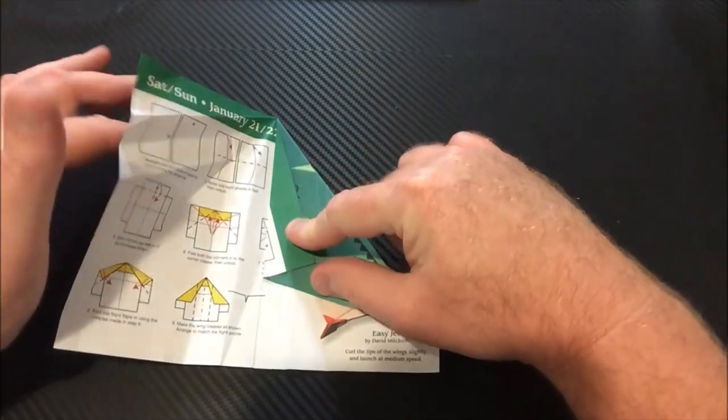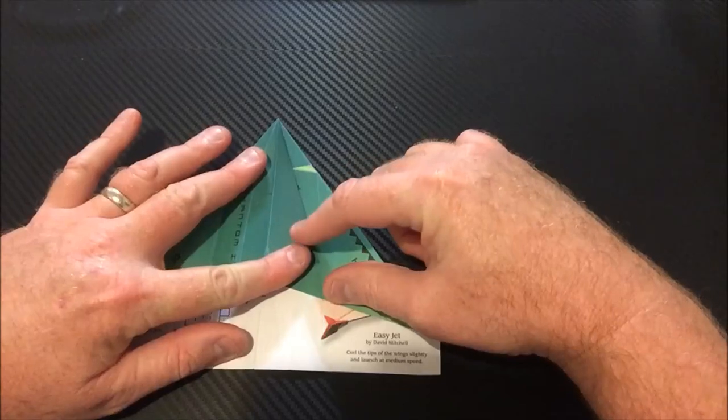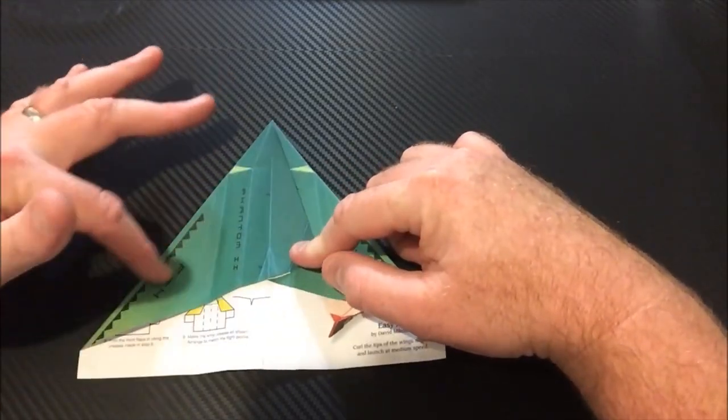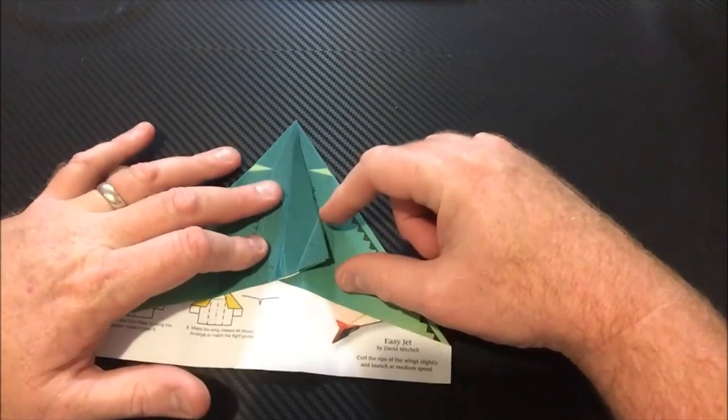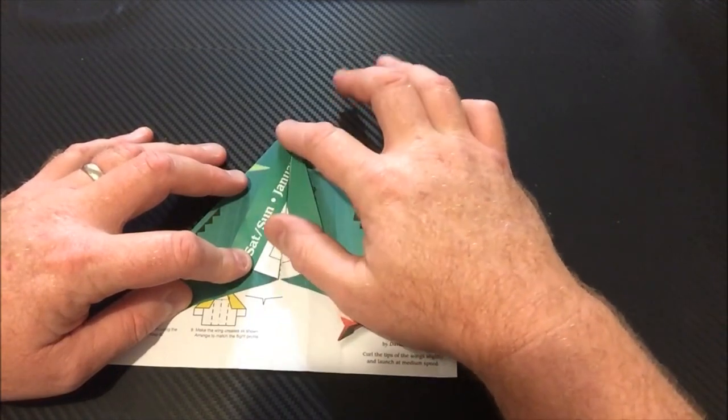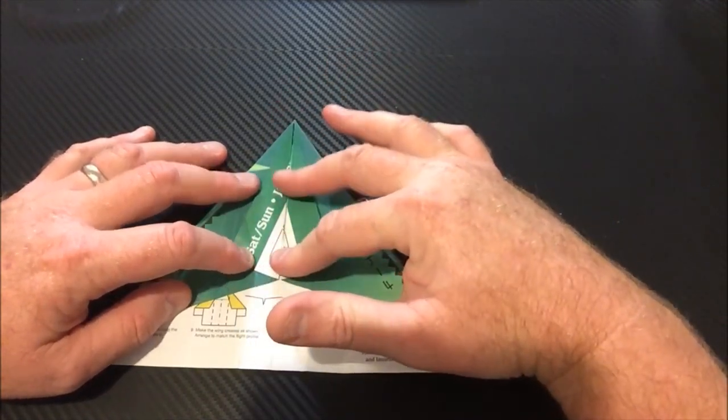Alright, now it will be the same on this side. You're going to fold it so it's going to go all the way over to here. Crease it in and then you're going to fold that piece back from the tip straight down that center crease.